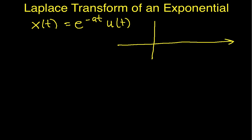Well, the e to the minus at part, assuming that a is greater than 0, then this is a decaying exponential that looks something like this. It'll approach 0 but never get there.